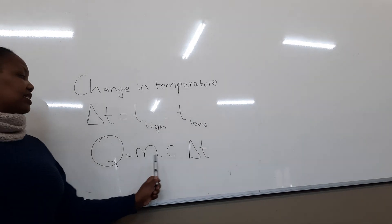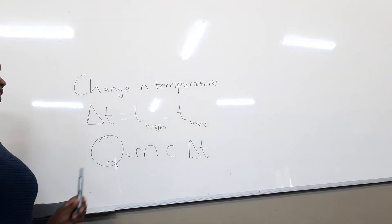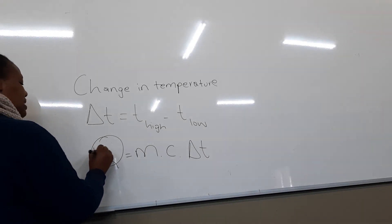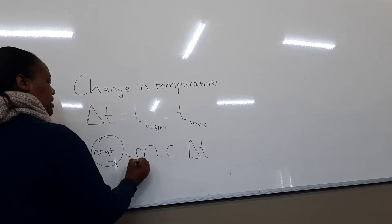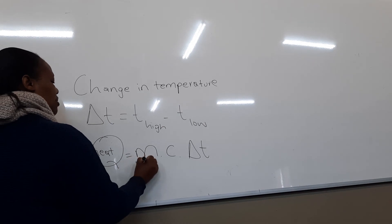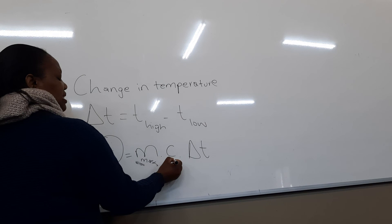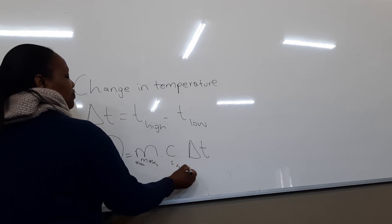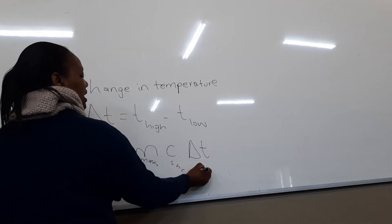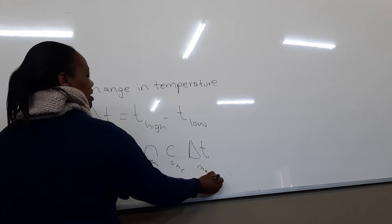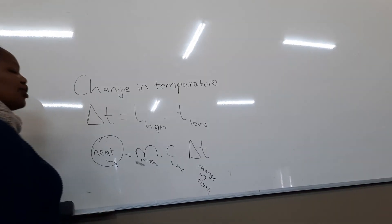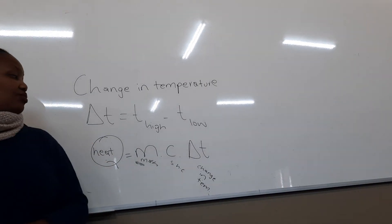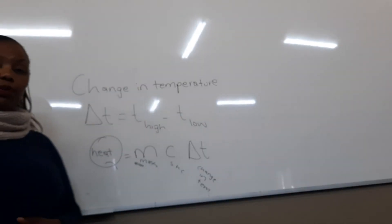These three factors lead us to the formula that helps us calculate heat energy: Q equals mc delta T, where Q is the heat energy, M is the mass, C is the specific heat capacity, and delta T is the change in temperature. Together, these three determine how much heat energy you have, and this takes us to calculations where we apply this formula to work out problems.